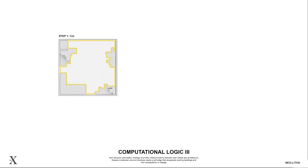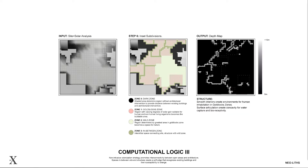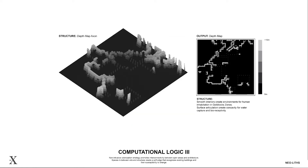Our third computational logic utilizes the procedures developed prior as well as the stepping condition. The buildable area, determined by the solar analysis, gets subdivided into irregular orthogonal interlocking regions. The region with the largest area becomes open space. The borders between these regions open to allow for wilderness to spread through the site. The edges are divided and dissolved to introduce flexibility for future intervention and openness. By incorporating the stepping condition, the output depth map becomes an informed floor plan containing three-dimensional information for further translation.